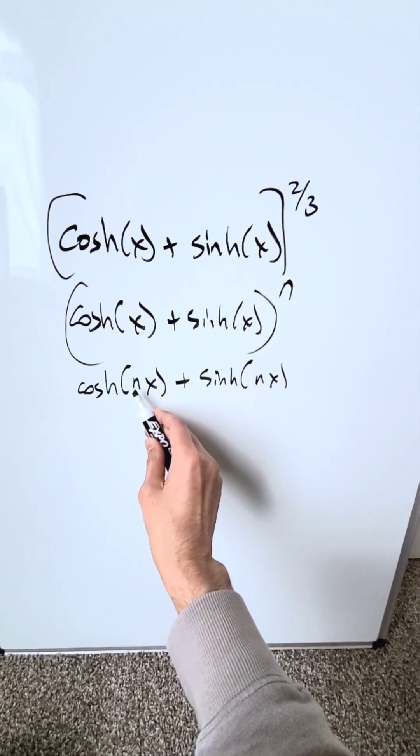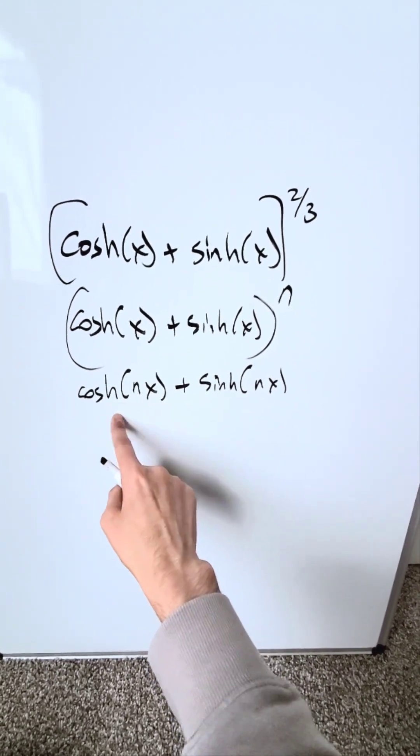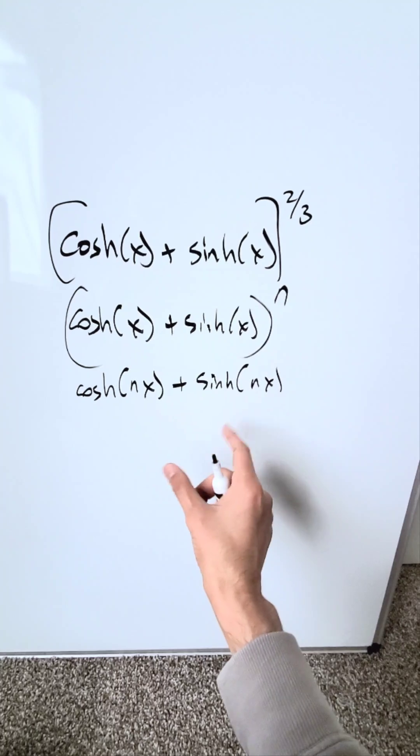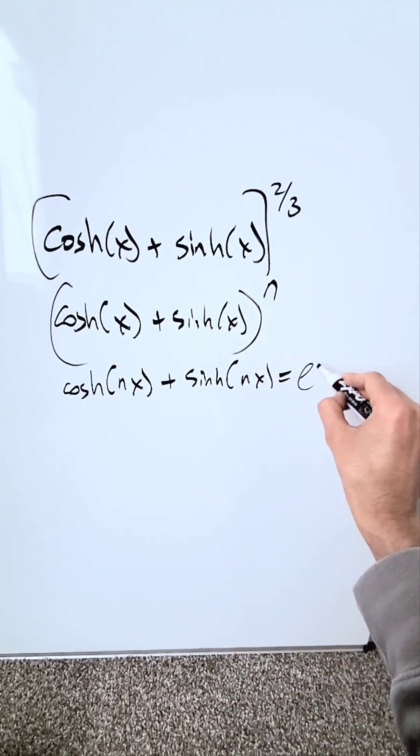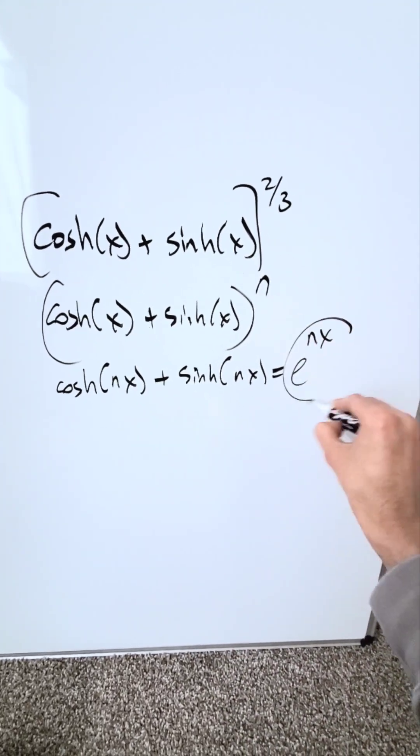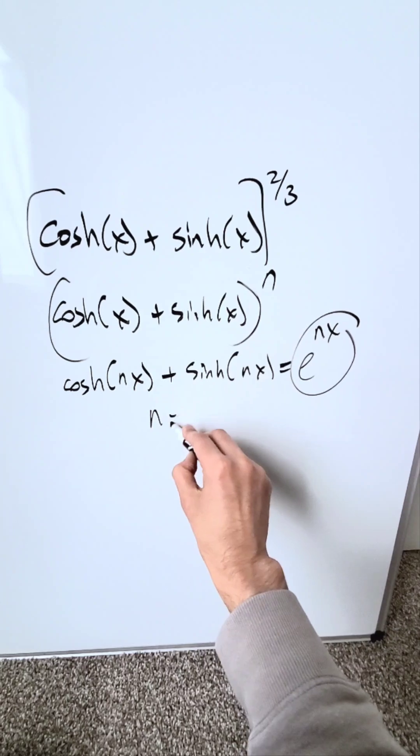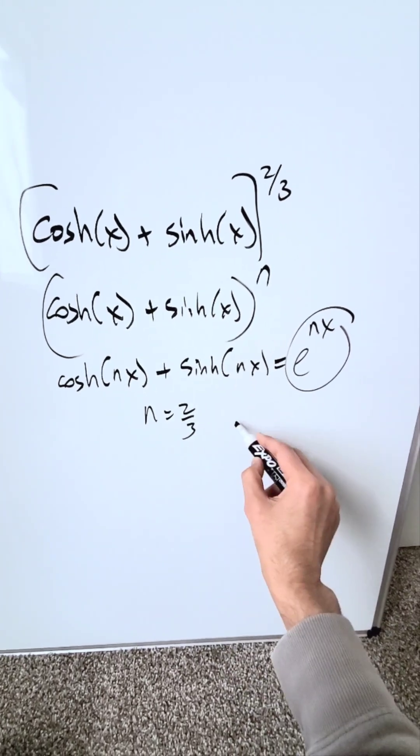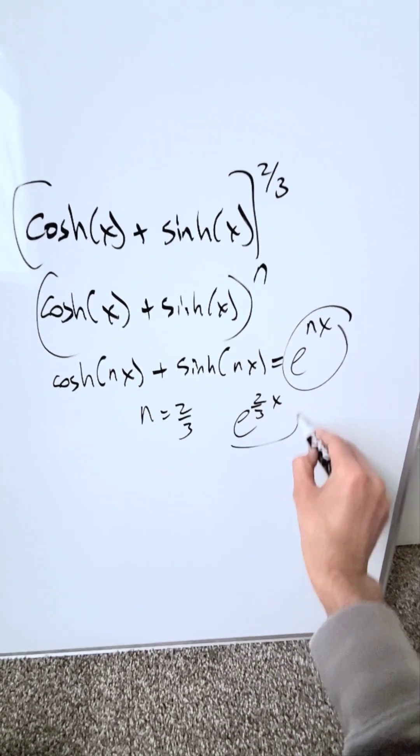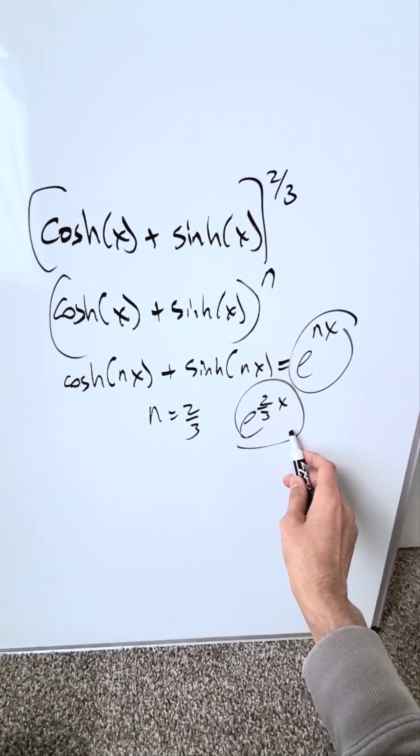You will run the n value through the basic definition of hyperbolic cosine and hyperbolic sine. When you simplify it, your n result will always be e to the power of nx. I'm looking here at my n value equal to 2 over 3. Therefore, my result will be e to the power of 2 over 3 and then x. And that right there will be a correct answer.